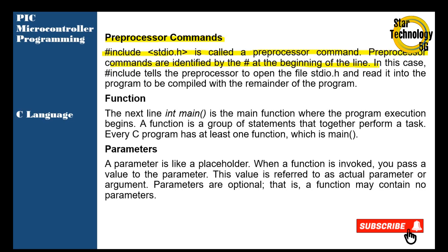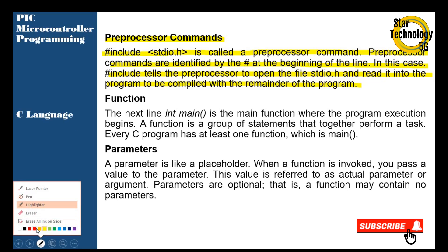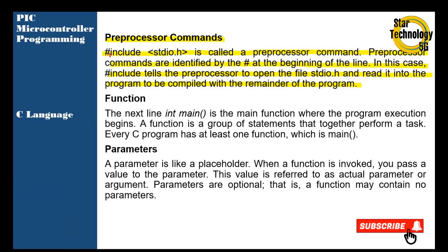Preprocessor commands are identified by the hash at the beginning of the line. In this case, hash include tells the preprocessor to open the file stdio.h and read it into the program to be compiled with the remainder of the program. The preprocessor command tells the compiler to add that specific file — just like we add stdio.h — to the remainder of the program.